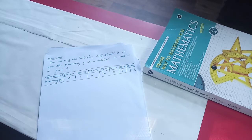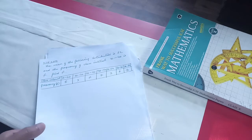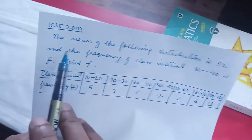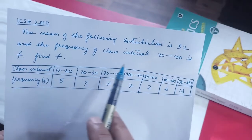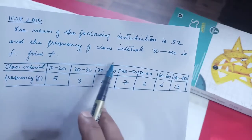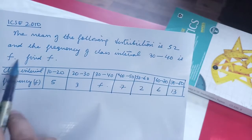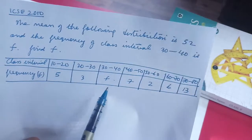Today we are going to do something slightly different — basically the same formula — but here the frequency will be missing. I have taken one ICSE question and I'm going to solve it for you. The question is from ICSE 2010: the mean of the following distribution is 52, and the frequency of the class interval 30 to 40 is F — the missing frequency.